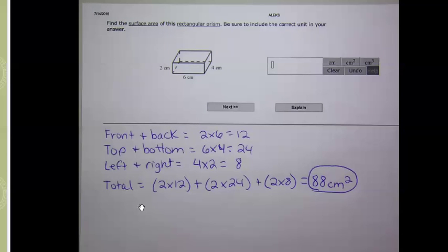And so for the total of all six sides, we need to take two times twelve for the front and back, plus two times twenty-four for both the top and bottom, plus two times eight for both the left and right. So two, four, six sides. And when we add those together, we get eighty-eight.